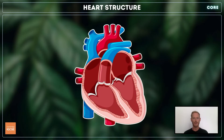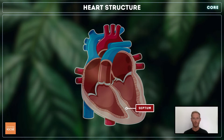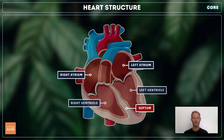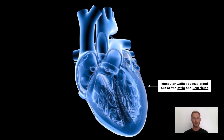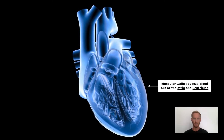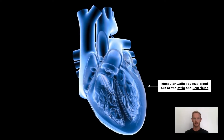We'll begin with the main structures of the mammalian heart. The heart has four chambers, divided by a muscular wall called the septum. They are the left and right atria, and the left and right ventricles. To remember which side is which, imagine that it's your heart and that you're facing outwards from the screen. The chambers of the heart have muscular walls which contract, pumping the blood out of a given chamber and into the next part of the system.